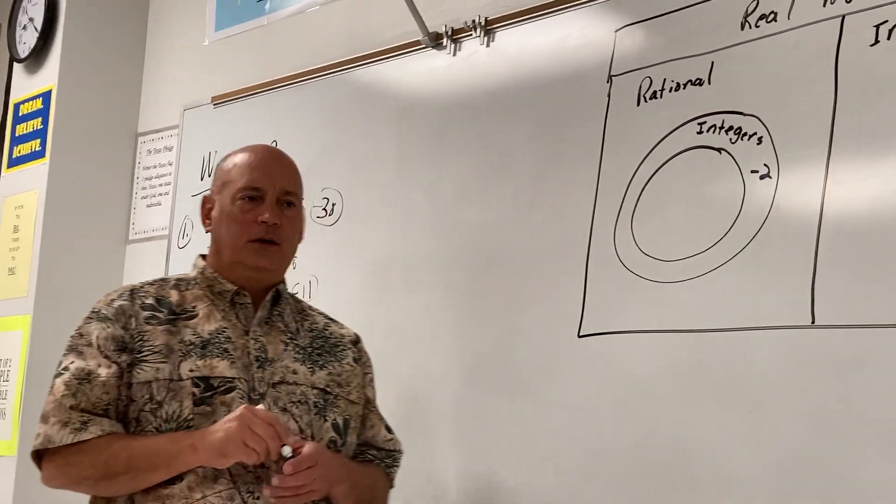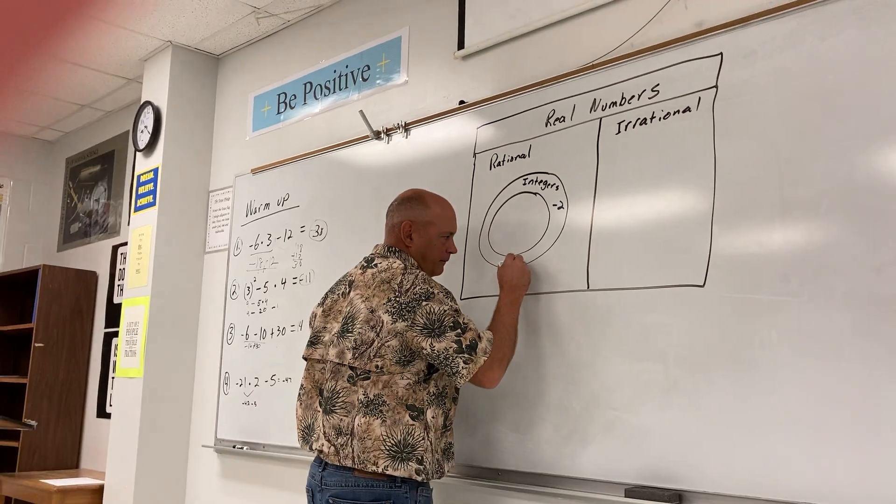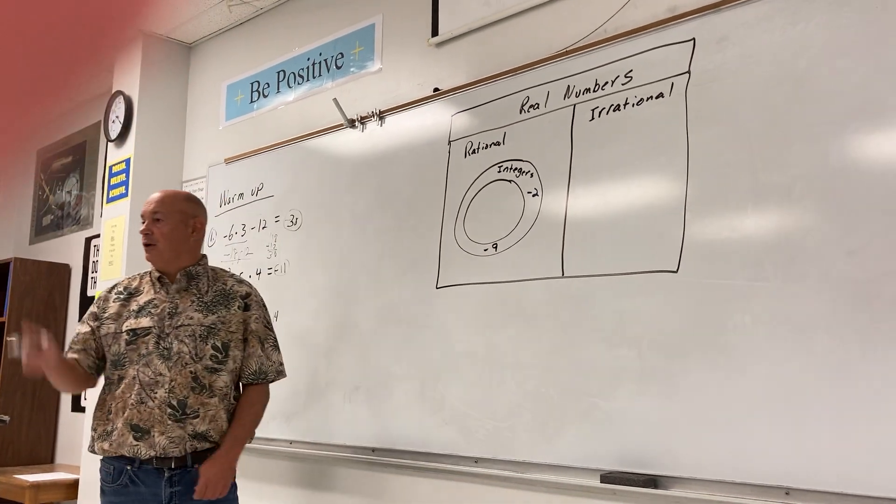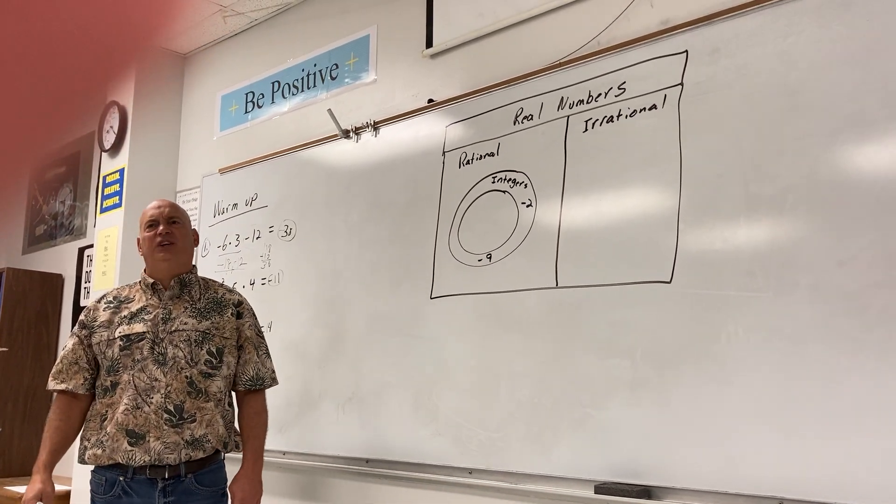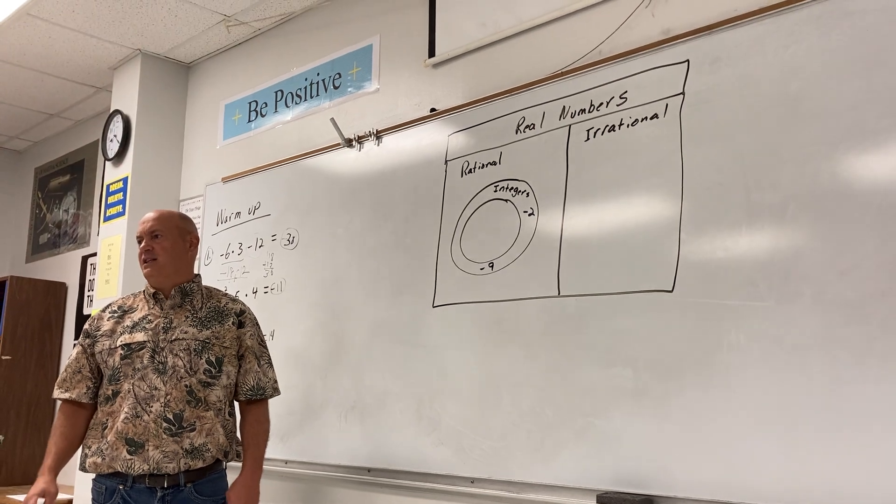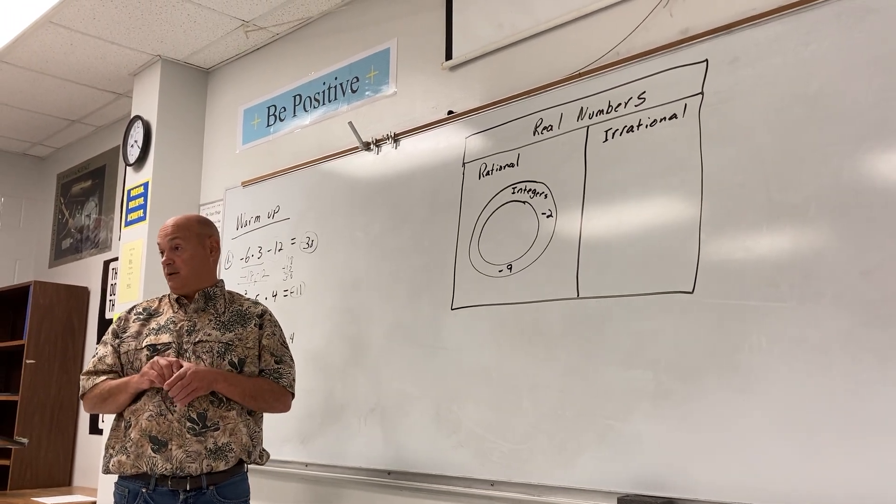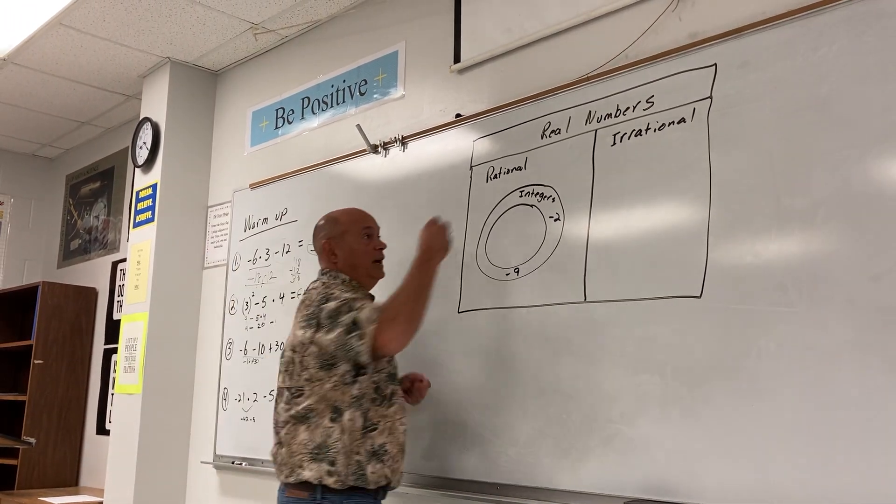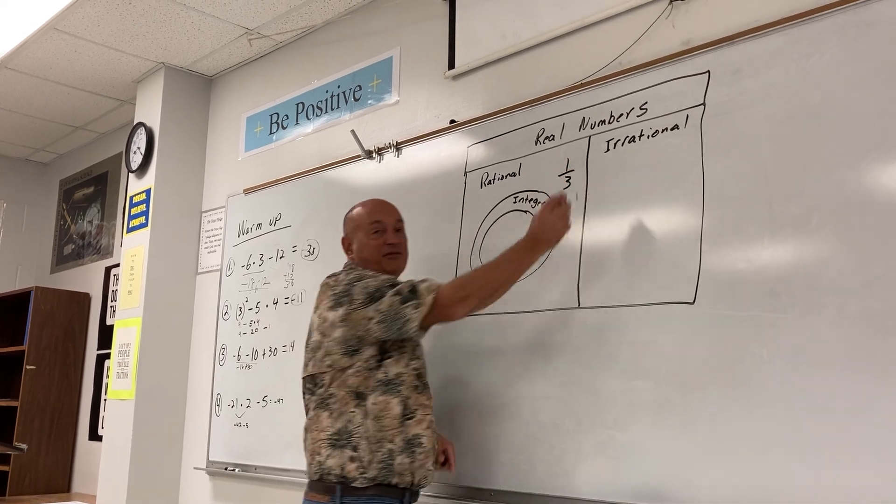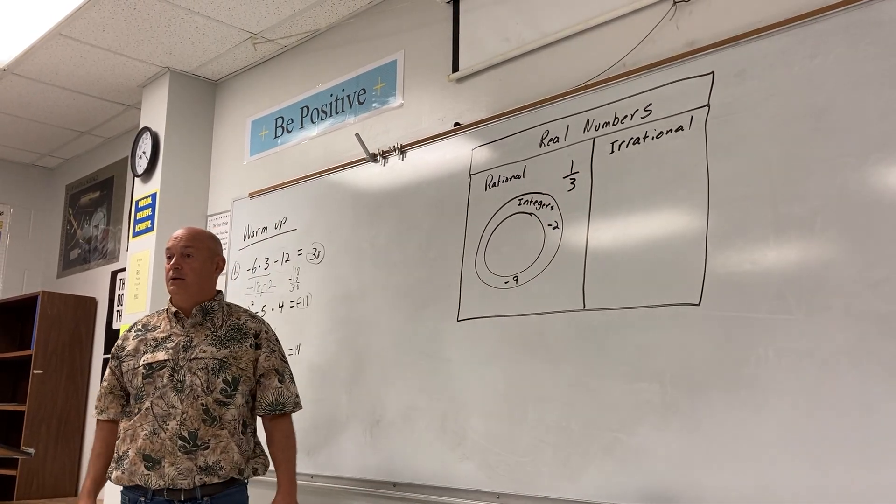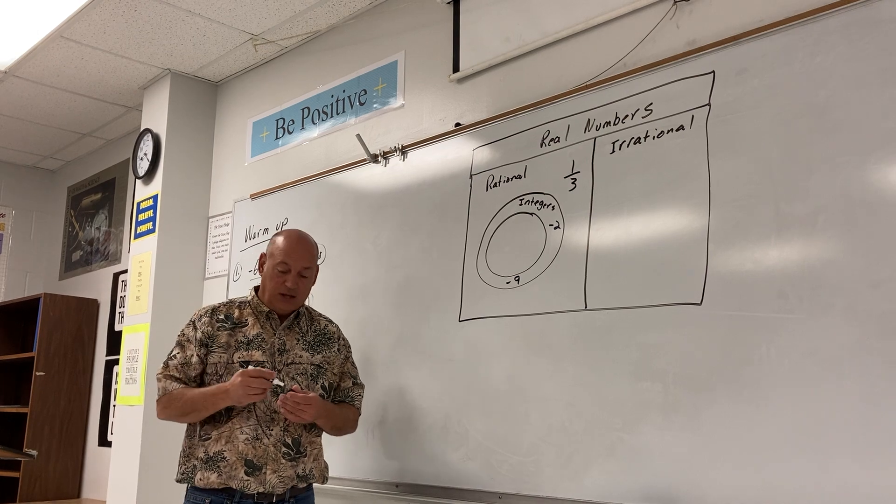Emma? Negative nine. Another integer. One-third. One-third would not be an integer because that is a decimal. So, one-third, Caden, would go out here because it's a fraction. So, it's just a rational number. Give me another one.